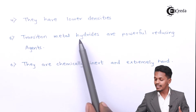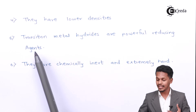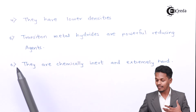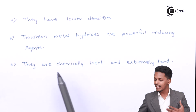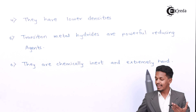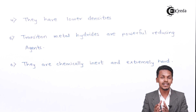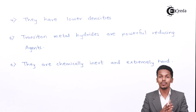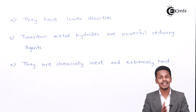Transition metal hydrides are powerful reducing agents. Additionally, interstitial compounds are chemically inert and extremely hard — similar to diamond — because of the strong bonds between the elements.